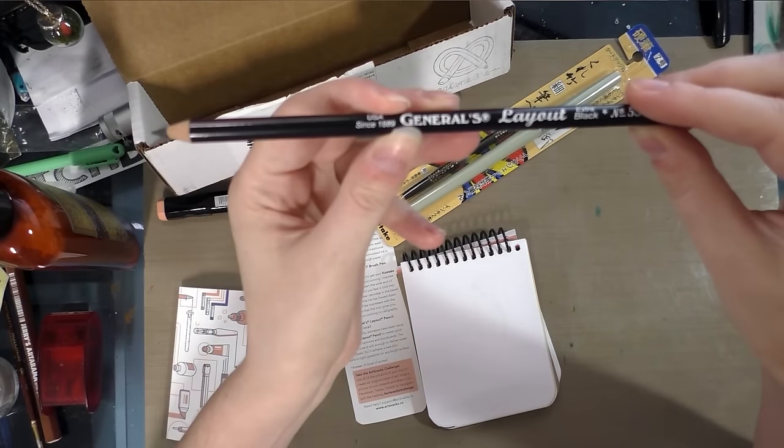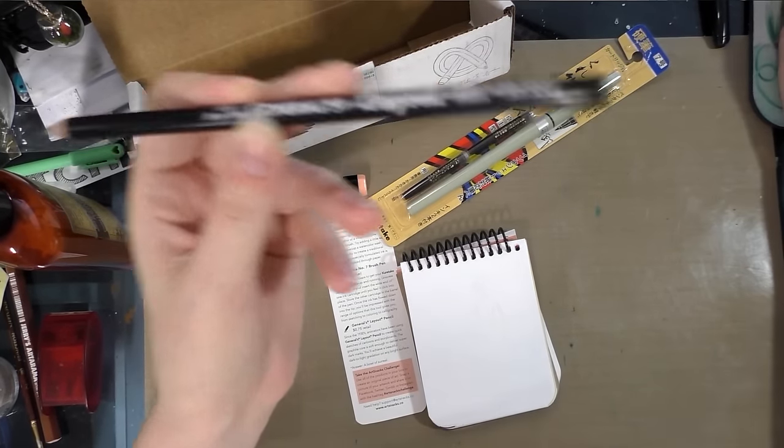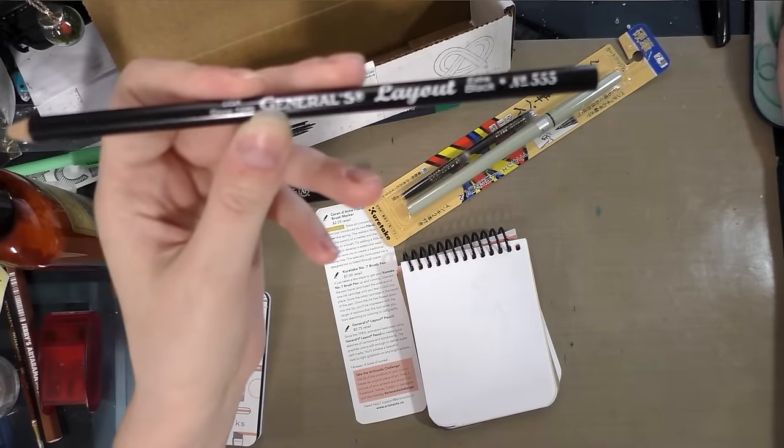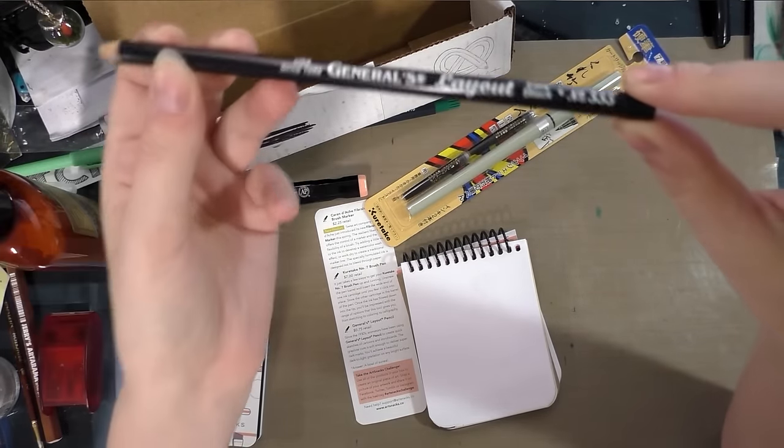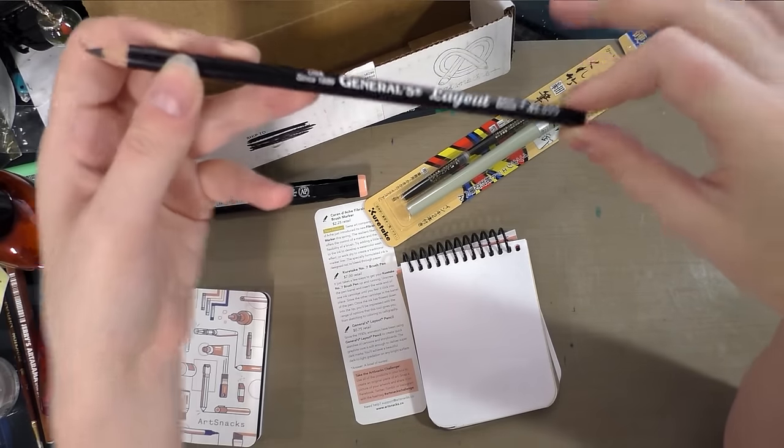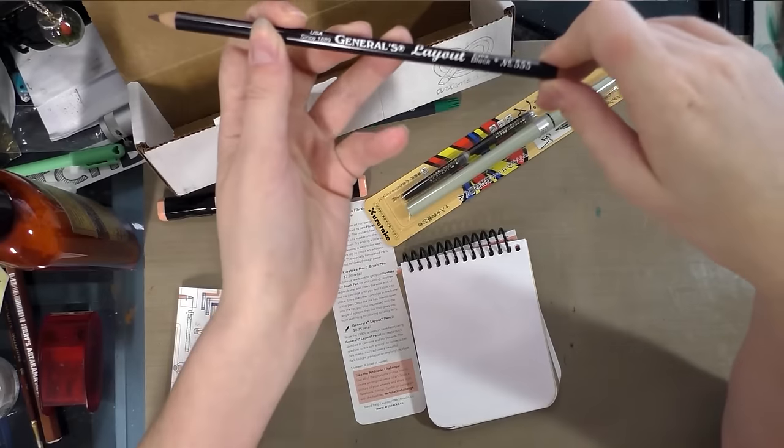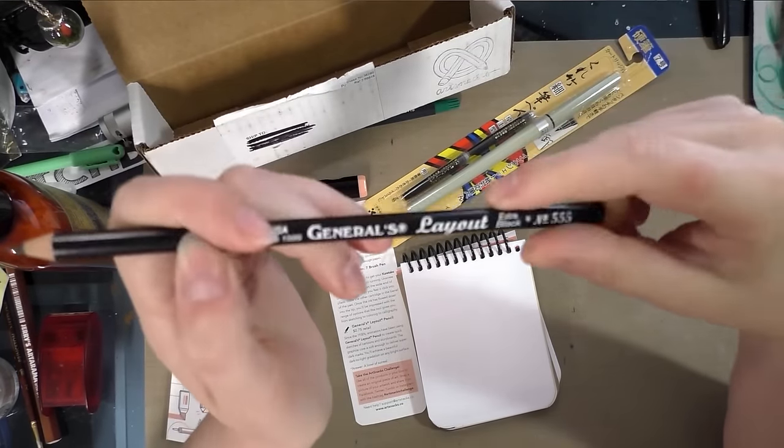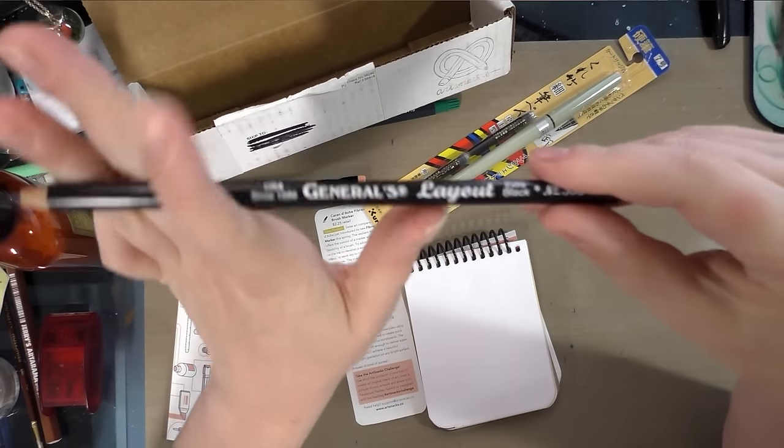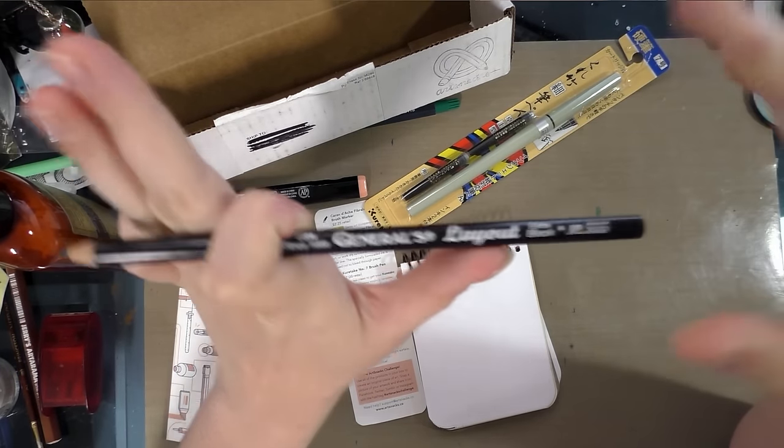Last but not least is the General's Layout pencil, which ArtSnacks says is $0.75 retail. For a package of 12, you can get them for $5.39 on Dick Blick, which makes it $0.45 per marker. Open stock on Cheap Joe's ArtStock, they're $1.59 each. So if you enjoy these, you should consider buying them in bulk rather than individually.